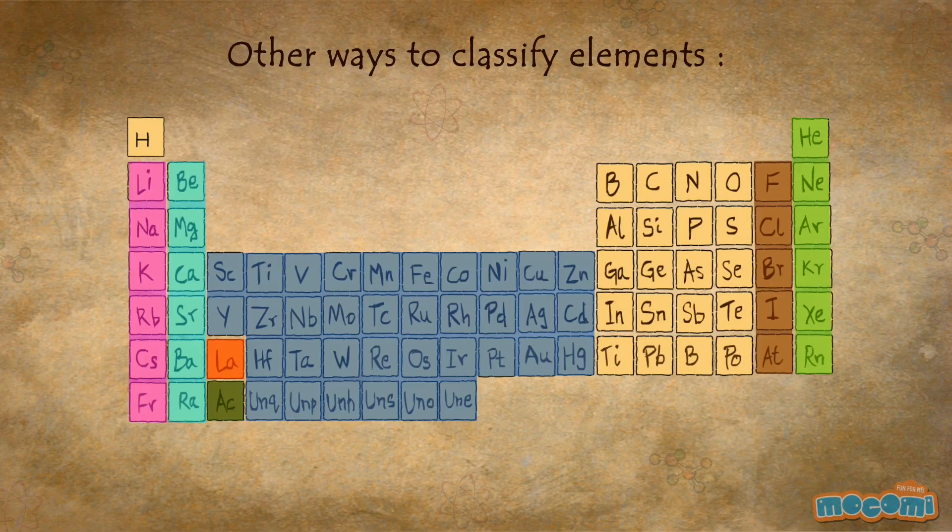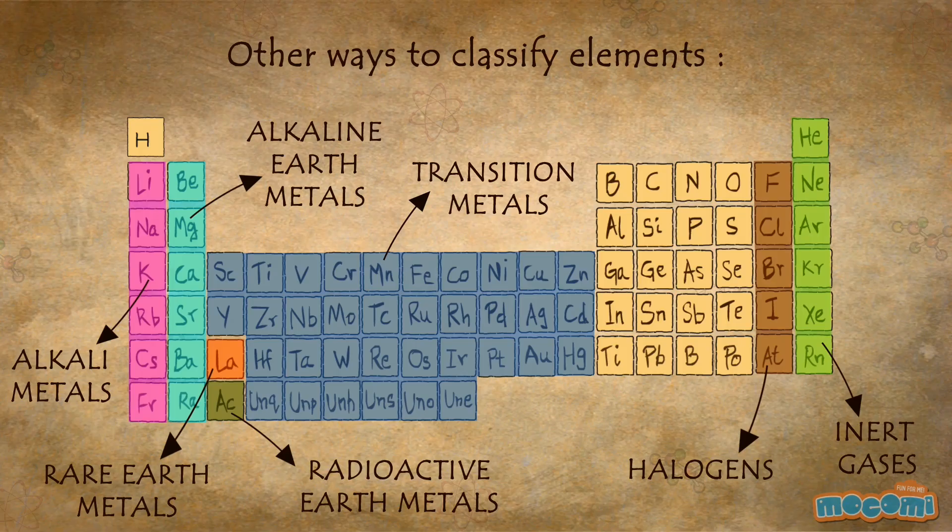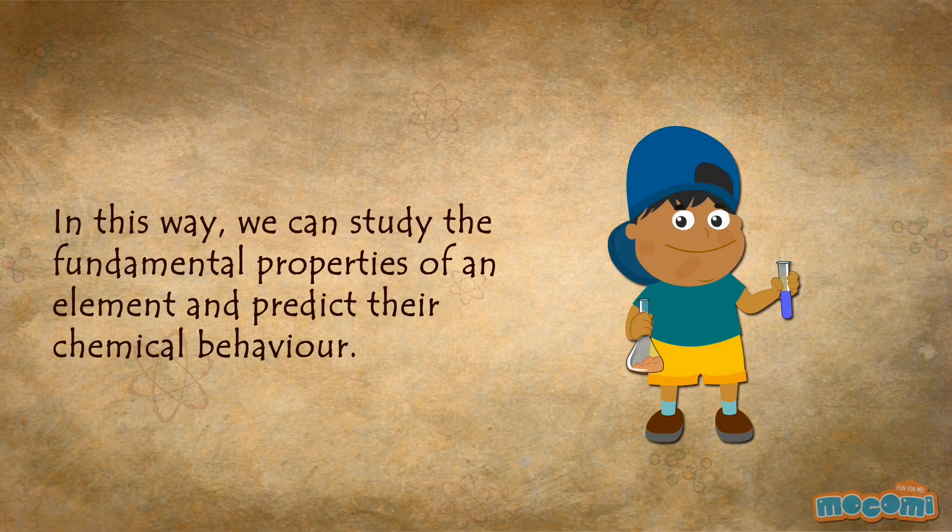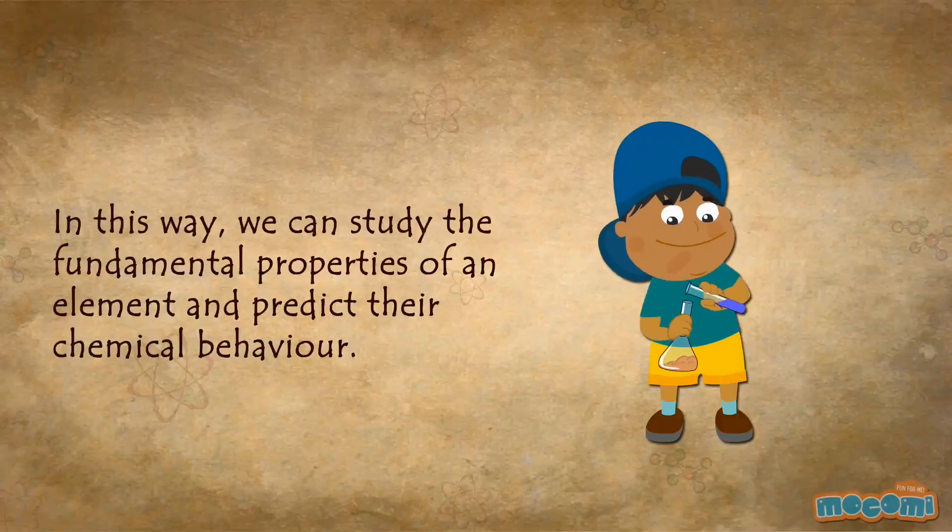Other ways to classify elements include alkaline metals, alkaline earth metals, rare earth metals, radioactive earth metals, transition metals, halogens and inert gases. In this way we can study the fundamental properties of an element and predict their chemical behavior.